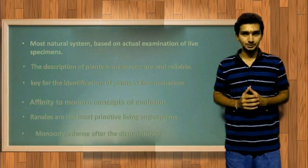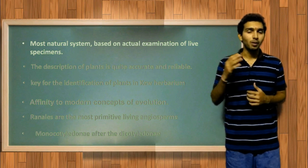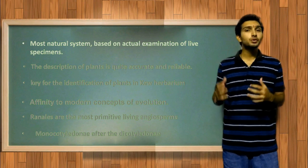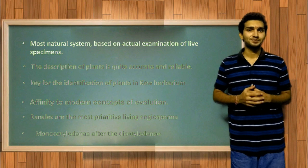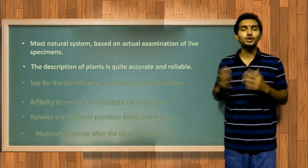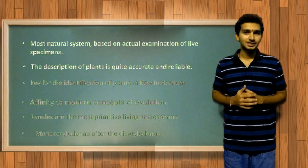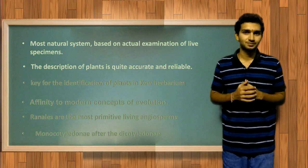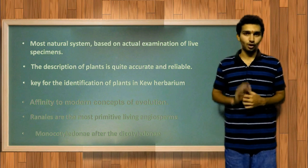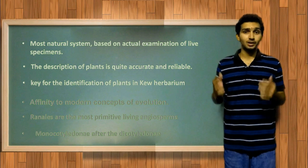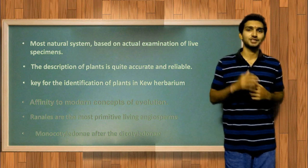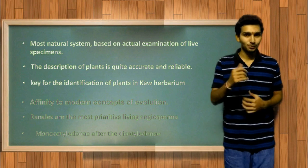Bentham and Hooker classification is a natural system by which actual examination of live specimens and preserved herbarium sheets is done. The description of plants is quite accurate and reliable without microscopic studies as well as at molecular level. As it is easy to follow, it is used as a key for identification of plants in Kew herbaria as well as several herbaria in the world. In India, plants are arranged according to this classification only.